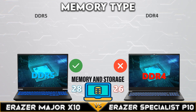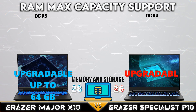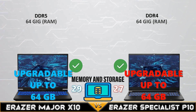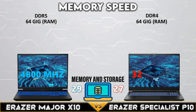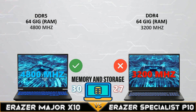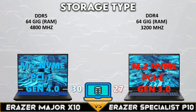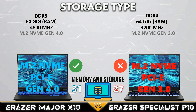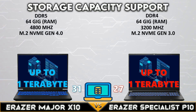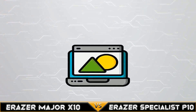Now let's move into the memory and storage comparison. The Major X10 supports DDR5 memory. Both laptops support up to 64GB of RAM. The Major X10 has 4800MHz of memory speed and supports up to NVMe Gen 4.0 storage. Both devices support up to 1TB of NVMe storage.